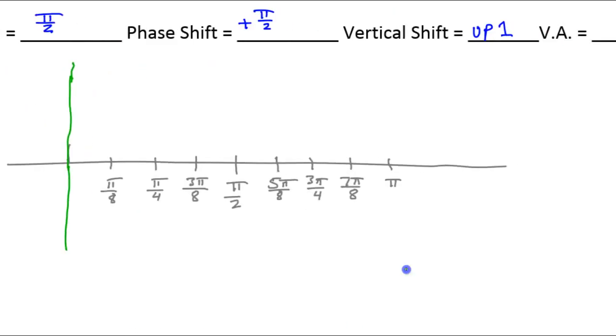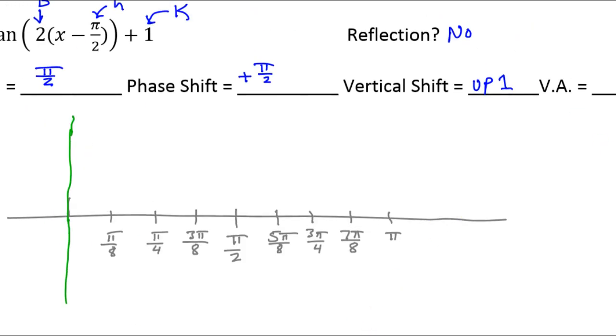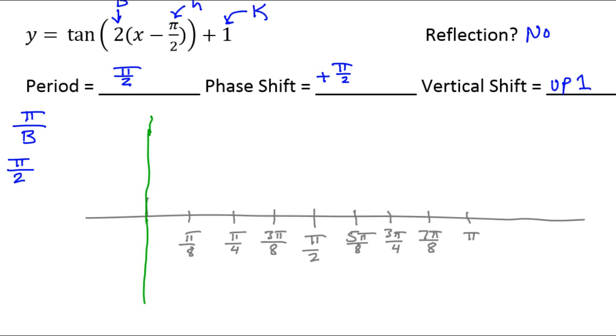Now, I know there's a vertical shift of up 1. I think the a value is just 1. So here I go. So this will be, I'll just mark this as 1. And then I'll mark this as 2. And then I think that's all I'm going to need. Those two markings.